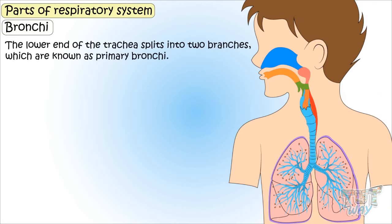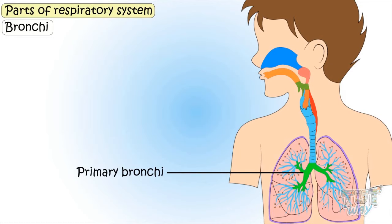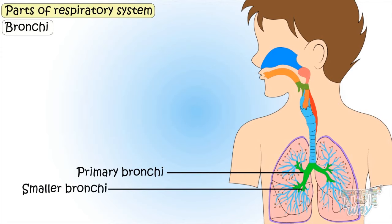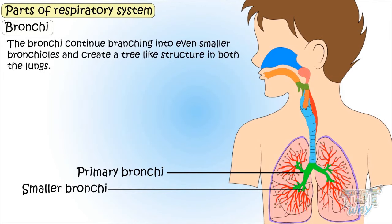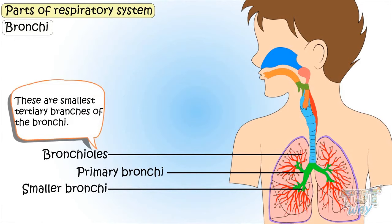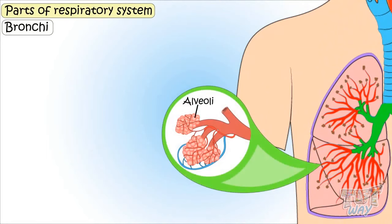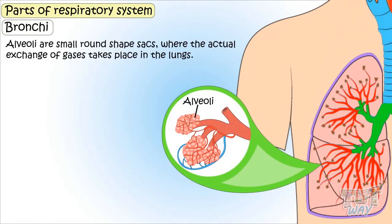Bronchi: The lower end of the trachea splits into two branches known as primary bronchi. These primary bronchi enter the lungs and then branch off into many smaller bronchi, continuing to branch into even smaller bronchi, creating a tree-like structure in both lungs. The smallest tertiary branches are known as bronchioles, and they end in very small structures called alveoli — small round-shaped sacs where the actual exchange of gases takes place.